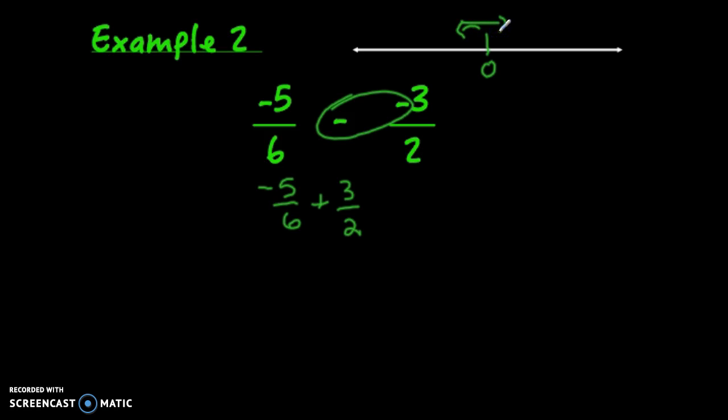Since 3/2 is more than 5/6, you'll end up in the positive zone. Your answer will be positive. Notice they aren't going the same direction, so we're finding the difference of their absolute values. The easiest way to do this problem is to subtract 3/2 minus 5/6.